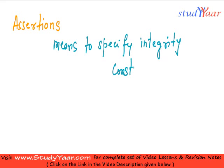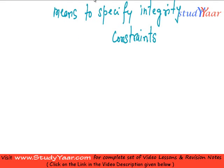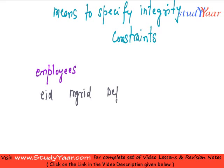So how do we do that? We are going to see this in SQL. Let us suppose I have a table called employees. In this I have fields: employee ID, manager ID, department, and salary of the employee. So basically this is my employees table.